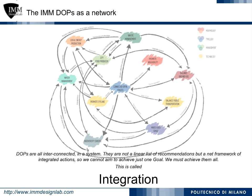Design ordering principles are not a linear list of recommendations. Instead, they are a net framework of integrated actions, which help us to achieve several goals simultaneously. Within the IMM framework, this is called integration. The DOPs help us to examine the complex adaptive system and detect the weakness of it.